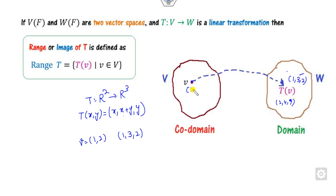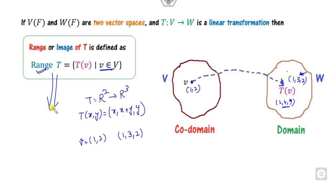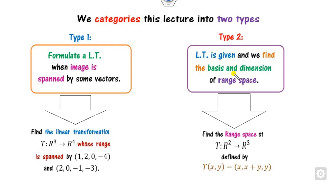The collection of all such images T(V) for V belonging to the domain is called the range of T, and the dimension of this range is called the rank. There are basically two kinds of problems. The first is that you have to formulate a linear transformation whose image is given as a span. The second is that the linear transformation is given and you have to find the range space.